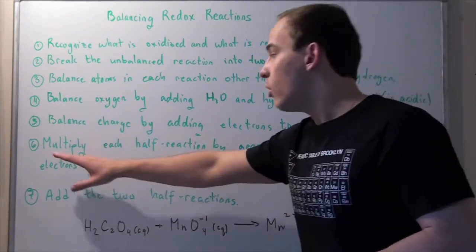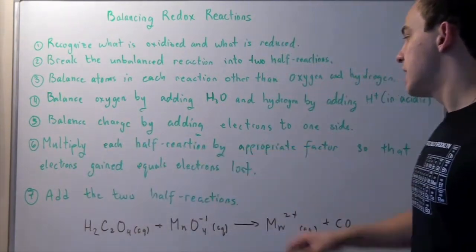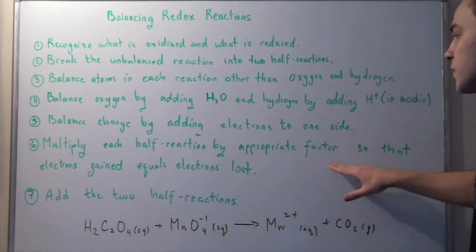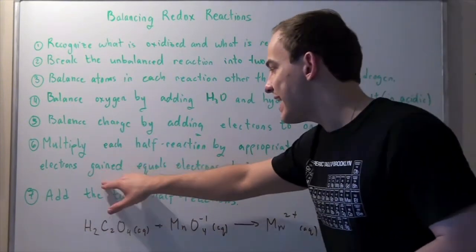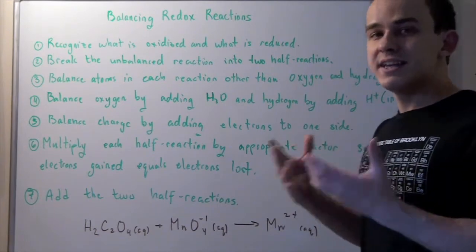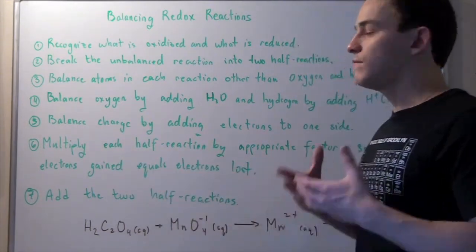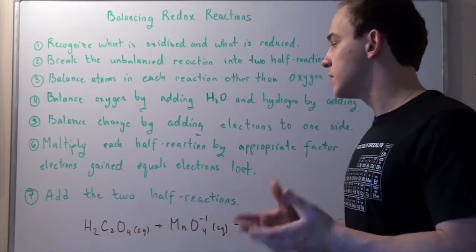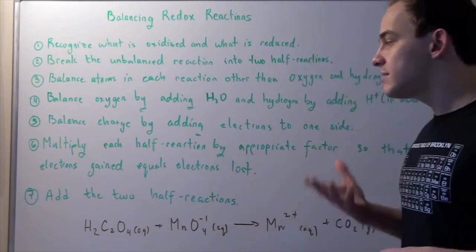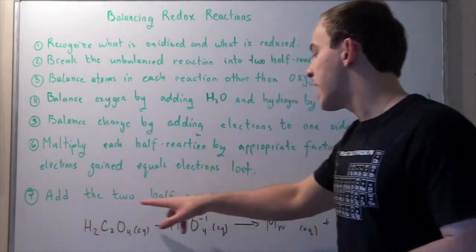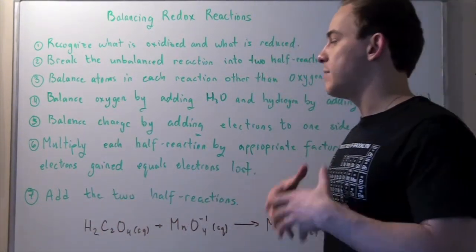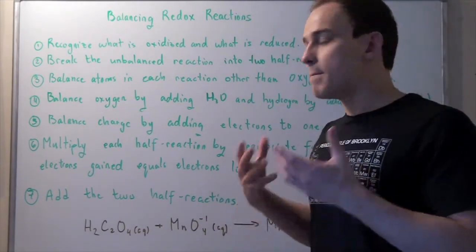Next, you multiply each half-reaction by appropriate factor so that electrons gained equals electrons lost. Once again, this comes from the conservation of energy or the conservation of charge. In the final step, you basically add the two half-reactions and check to make sure that they are in fact balanced.